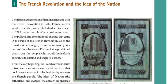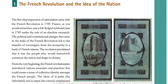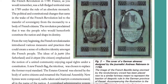French Revolution and the Idea of the Nation. The first clear expression of nationalism came with the French Revolution in 1789. France was a full-fledged territorial state in 1789 under the rule of an absolute monarch. The political and constitutional changes in the wake of the French Revolution led to the transfer of sovereignty from the monarchy to a body of French citizens. The revolution proclaimed that it was the people who would henceforth constitute the nation and shape its destiny. From the very beginning, the French revolutionaries introduced various measures and practices that could create a sense of collective identity amongst the French people.